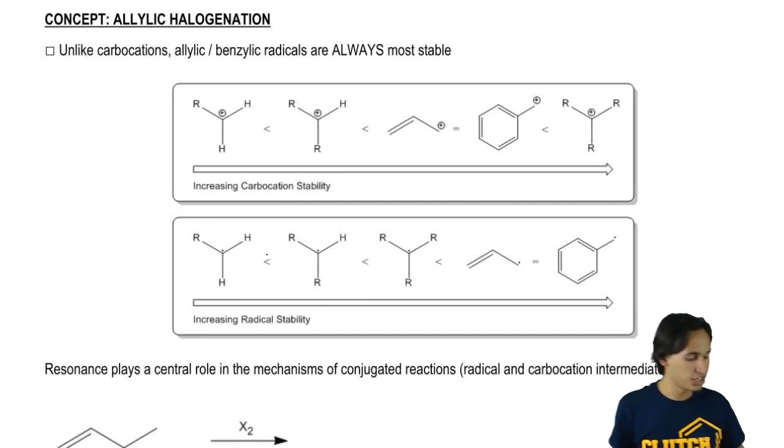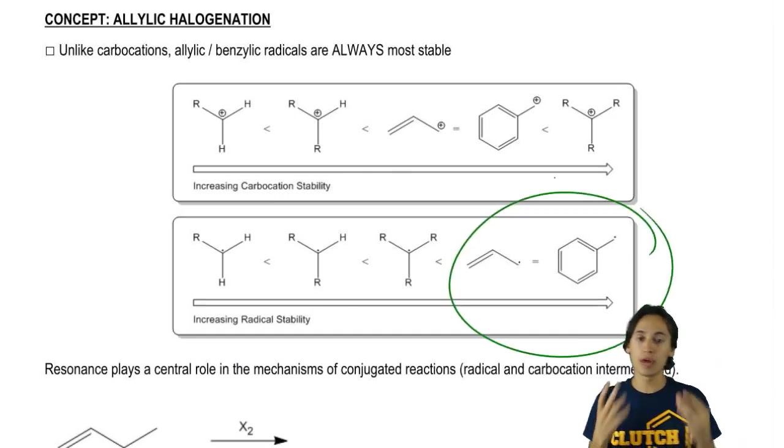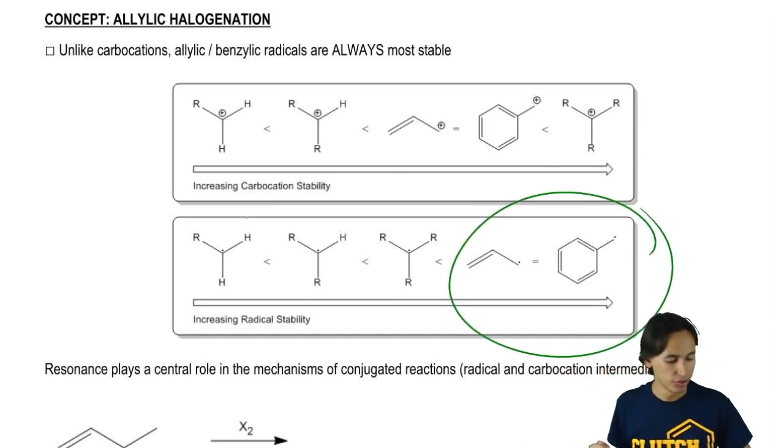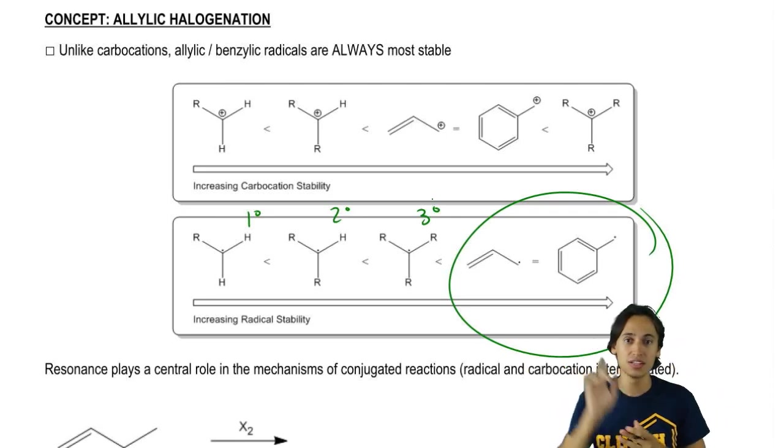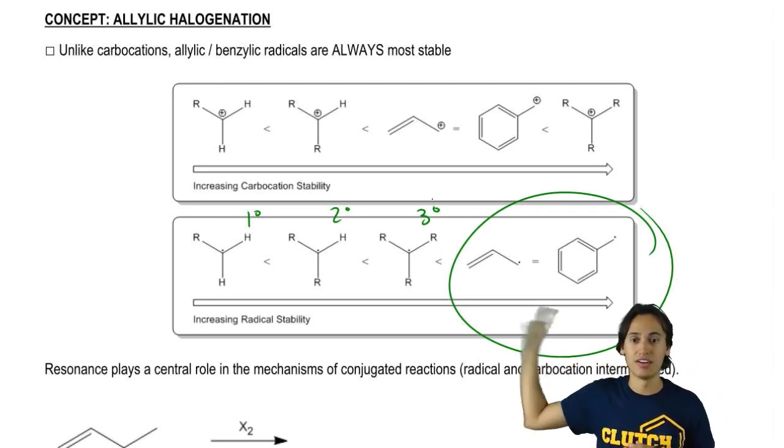Just in case you forgot, the allylic and benzylic radicals are more stable than primary, secondary, or tertiary. So if I have one of these two possibilities, this is going to be my preferred spot, not those three.